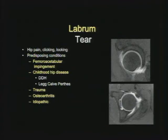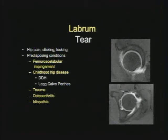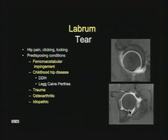Patients with labral tears present with clicking, pain, and locking of the hip. The big topic right now is femoral acetabular impingement (FAI) because orthopedic surgeons can treat it. Other causes of labral tears include childhood hip disease putting abnormal stress on the labrum — developmental dysplasia, Legg-Calvé-Perthes, trauma, and osteoarthritis. We can also see the anterior and posterior labrum on axial images.